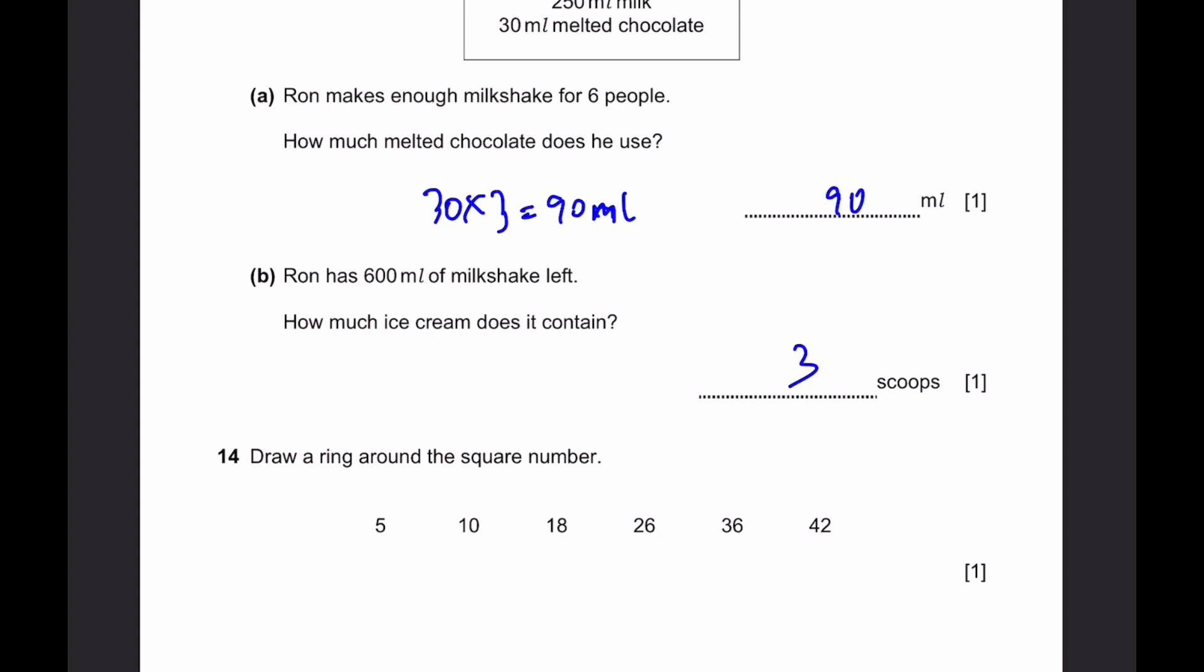Question 14. Draw a ring around the square number. None of them are square numbers except for 36, because 36 is 6 times 6, or 6 squared.